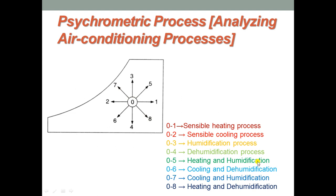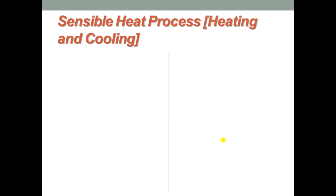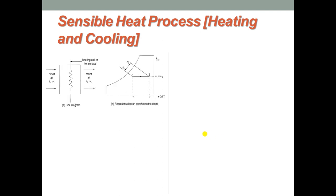So these are the 8 thermodynamic processes involved in air conditioning. Now we see individual processes one by one. The first one is the sensible heat process where heating and cooling is carried out. First we see heating, then we will go for cooling.